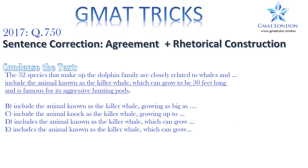We can learn two different lessons from this question: one about verb agreement and the other about rhetorical construction. Let's read the condensed version of the text. 'The 32 species that make up the dolphin family are closely related to whales and include the animal known as the killer whale, which can grow to be 30 feet long and is famous for its aggressive hunting pods.'